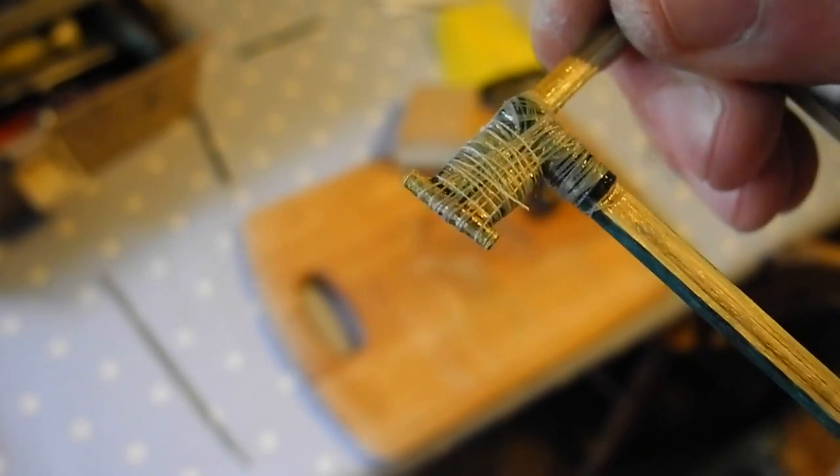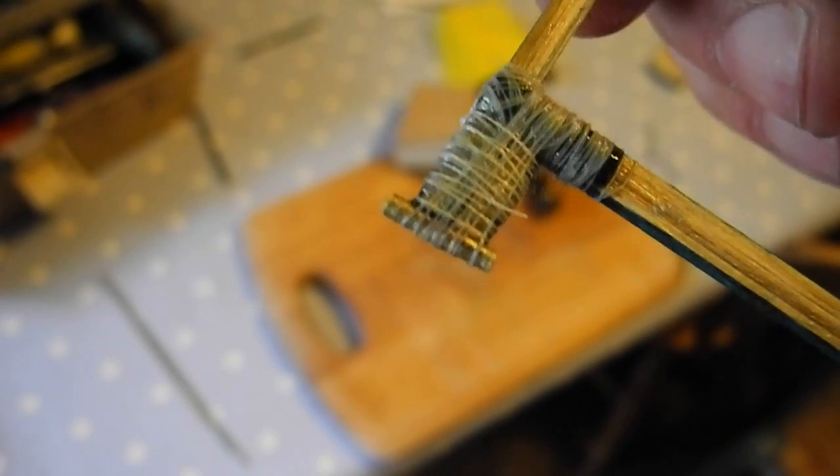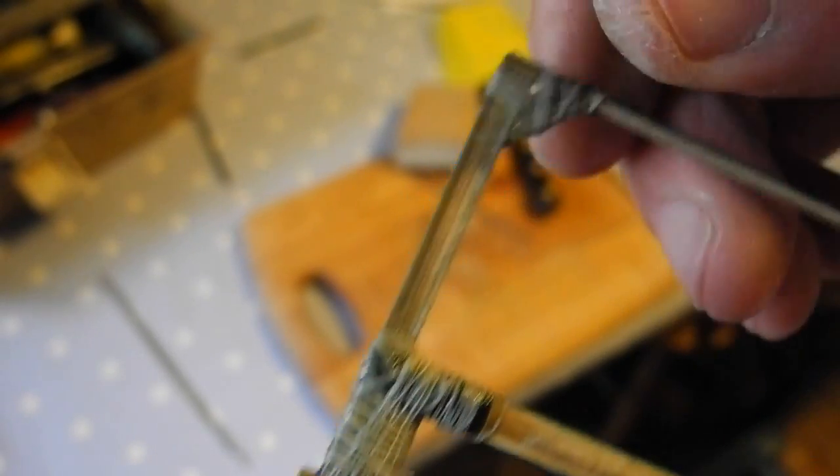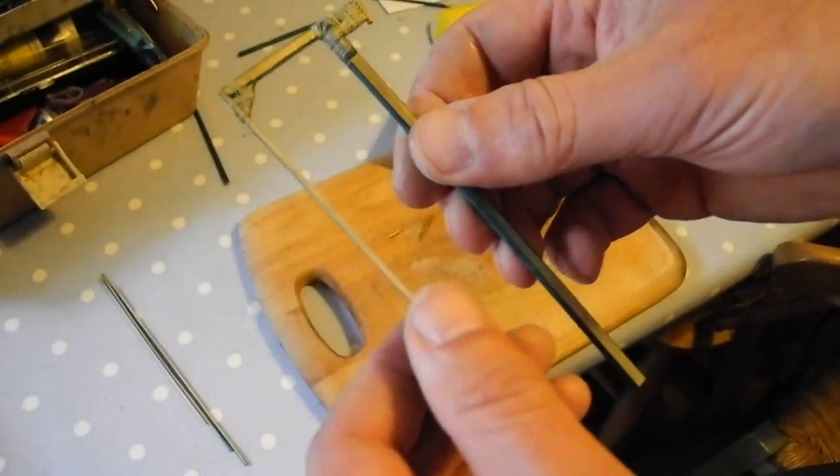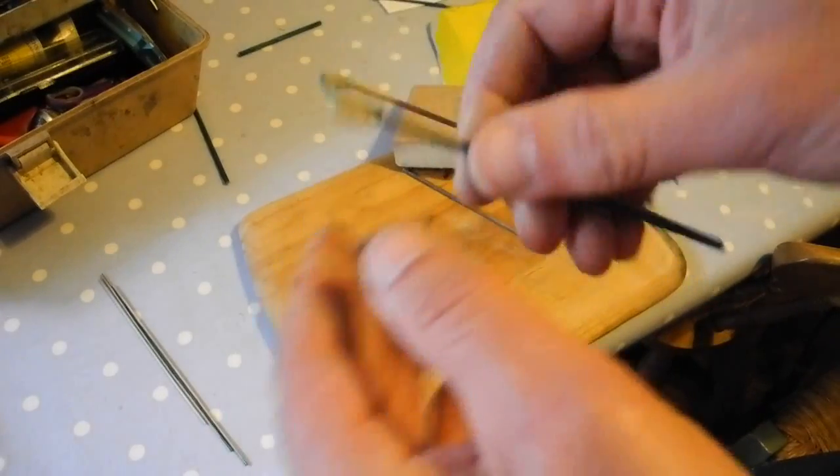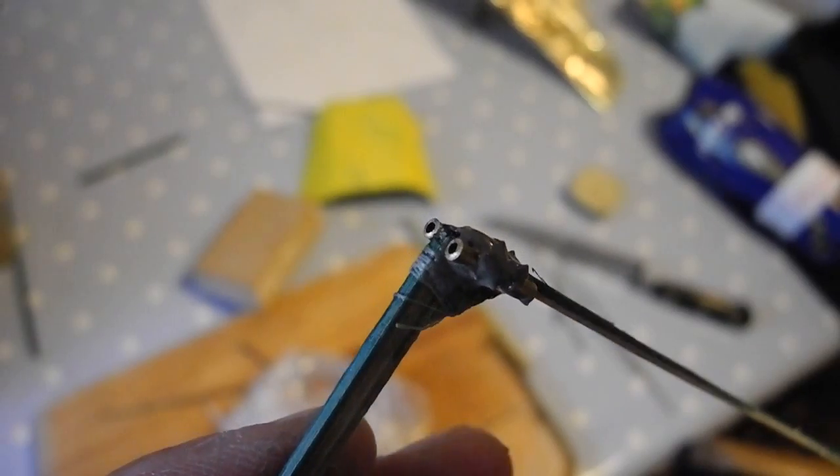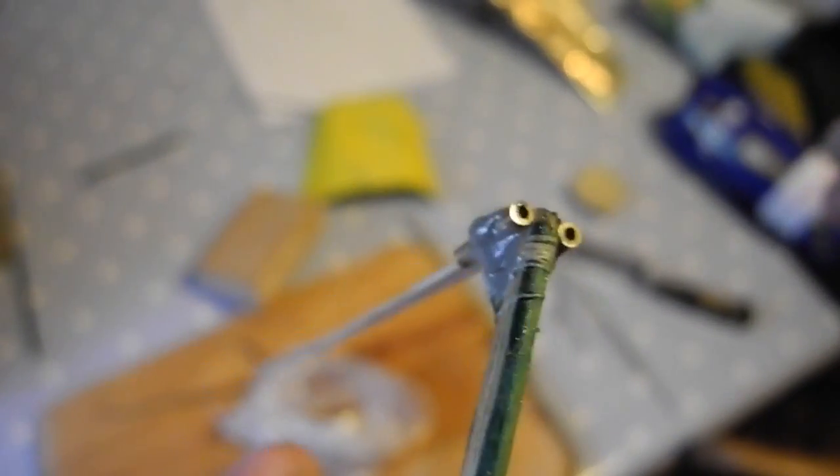And that weighs next to nothing at the moment, which is important. You always need to keep the weight down on these things. I was surprised how lightweight it can be made with bamboo actually. I've stuck the two top tubes on with some polyester resin, you know the stuff you fill cars with and what have you.